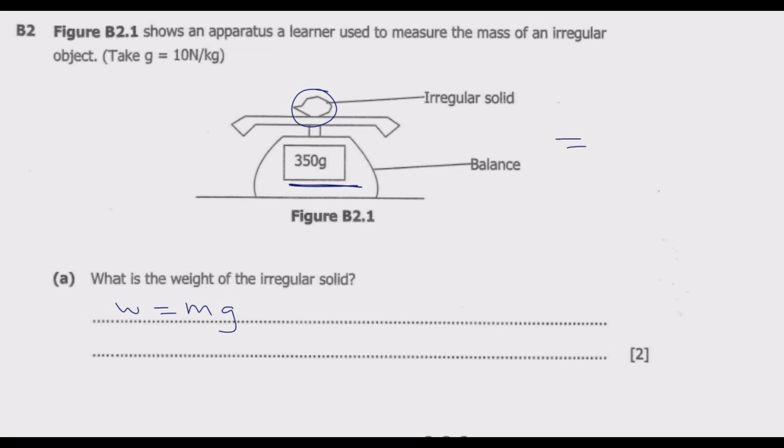To convert this to kg, we calculate 350 divided by 1,000 because there are 1,000 grams in 1 kg. So we end up with 0.35 kg.